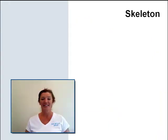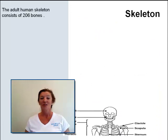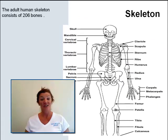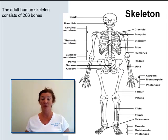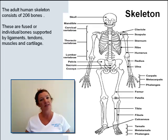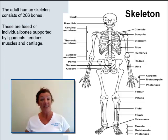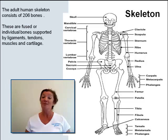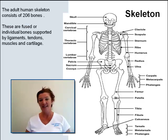Let's look at the skeleton. The human skeleton in an adult is made up of 206 bones. Some of these bones are actually fused together but are still counted as individual bones, though most of our bones are individual in their own right. All these bones are supported by ligaments, tendons, muscles, and cartilage.